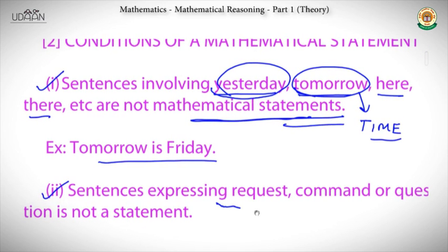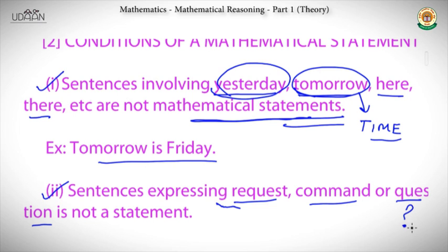The second condition is that sentences expressing a request, command, or question are not mathematical statements. If you have a question mark or exclamation mark in the statement, it is not mathematical because you are not giving information. For example, 'how many sides are there in a square?' is a question — you are not stating that the number of sides is four.